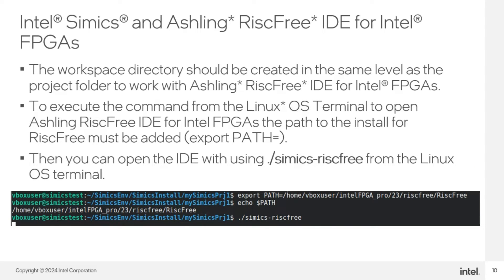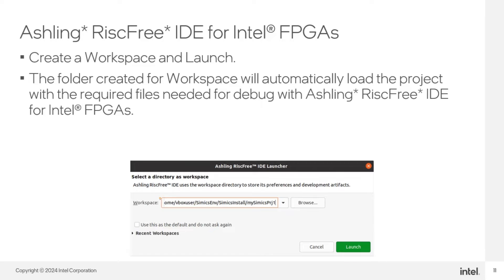To get started with an Intel Simix session inside Ashling RISC-V IDE for Intel FPGAs, it is necessary to work from the install directory for Intel Simix, then open Ashling RISC-V IDE for Intel FPGAs. The path to the install must be added with the export path equals command, to indicate where Ashling RISC-V IDE is installed, and then create a workspace for the Intel Simix session inside the IDE. The command simix-riscfree can now be used to open and launch the IDE. When the workspace is created and the IDE is launched, a new project is created under the current Intel Simix project directory, and the metadata is written in the workspace directory to complete the project.